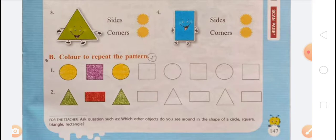In the second pattern, there are two shapes: triangle, rectangle, triangle, rectangle, triangle, rectangle, triangle, rectangle. We have to color all the triangles green and all the rectangles red. Listen carefully — all triangles are colored green and all rectangles are colored red.